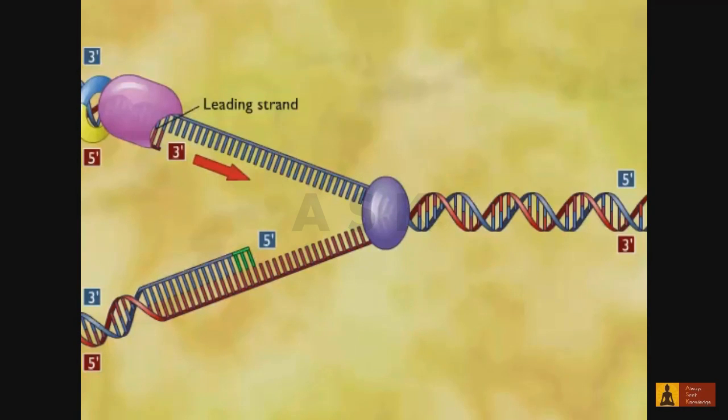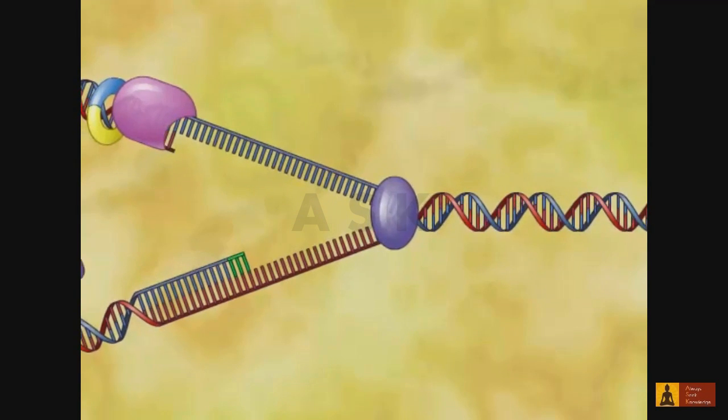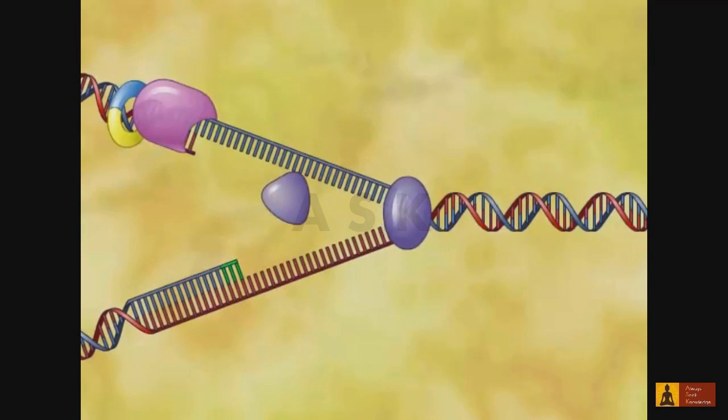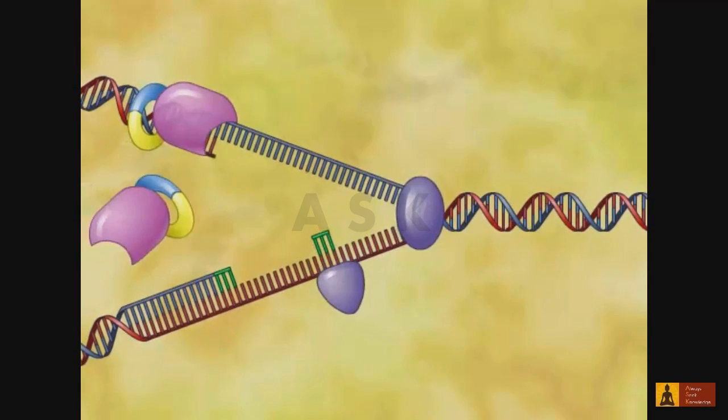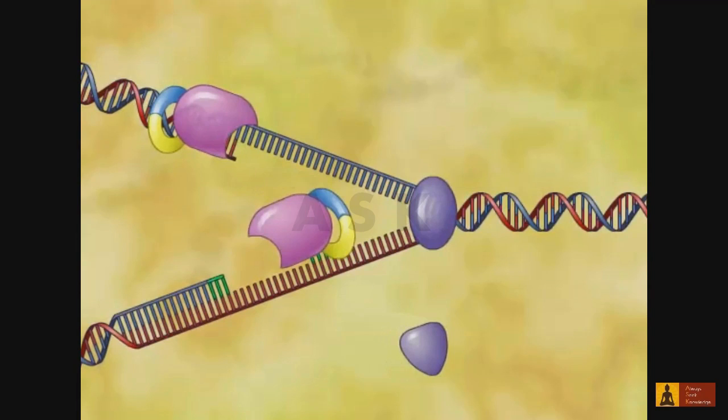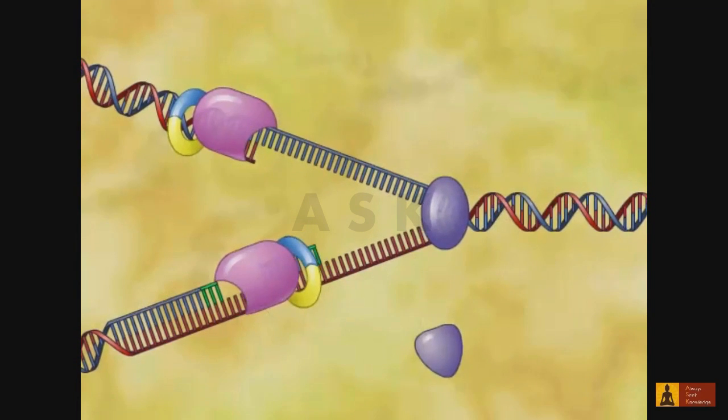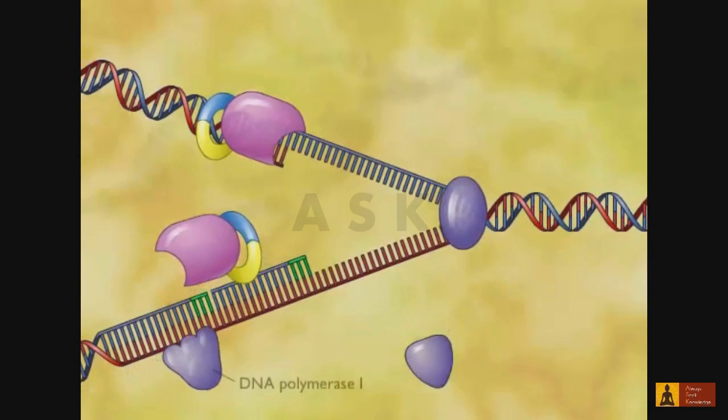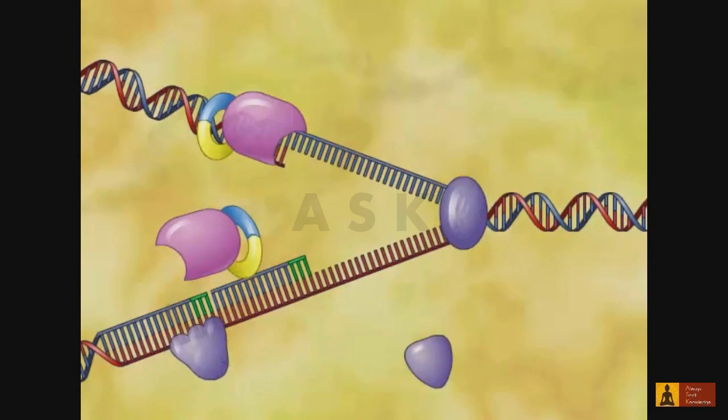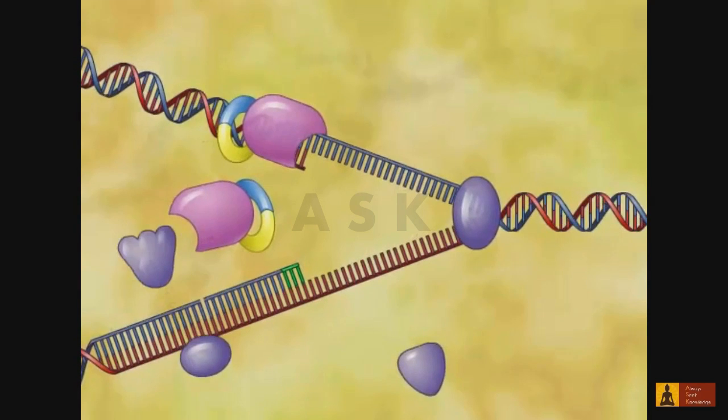In contrast, the lagging strand, which elongates away from the replication fork, is synthesized discontinuously as a series of short segments called Okazaki fragments. When DNA polymerase 3 reaches the RNA primer on the lagging strand, it is replaced by DNA polymerase 1, which removes the RNA and replaces it with DNA.